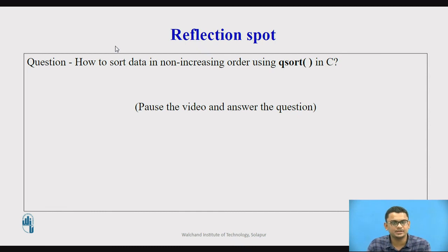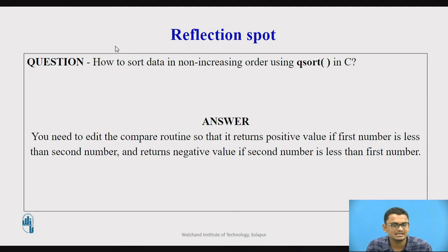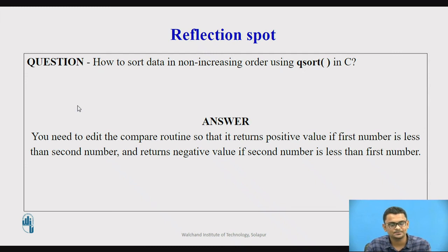Pause the video and think about how to sort data in non-increasing (decreasing) order using qsort. If you studied the compare subroutine carefully, you will understand that you need to edit it so it returns a positive value when the first number is less than the second, and a negative value when the second is less than the first. Making those changes to the relational operator will sort the data in non-increasing order.